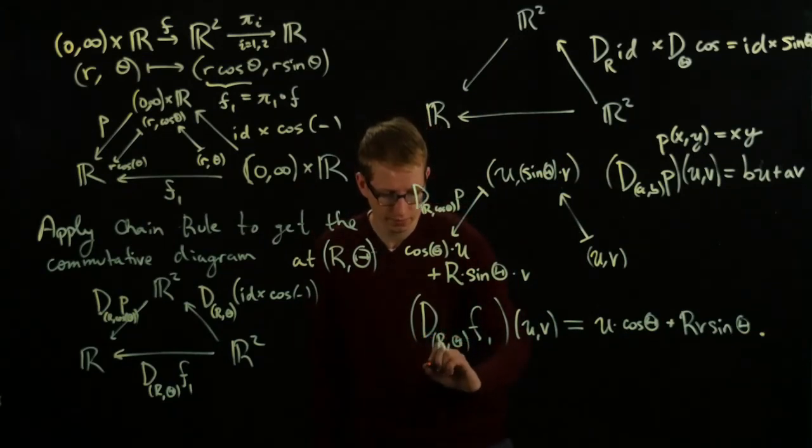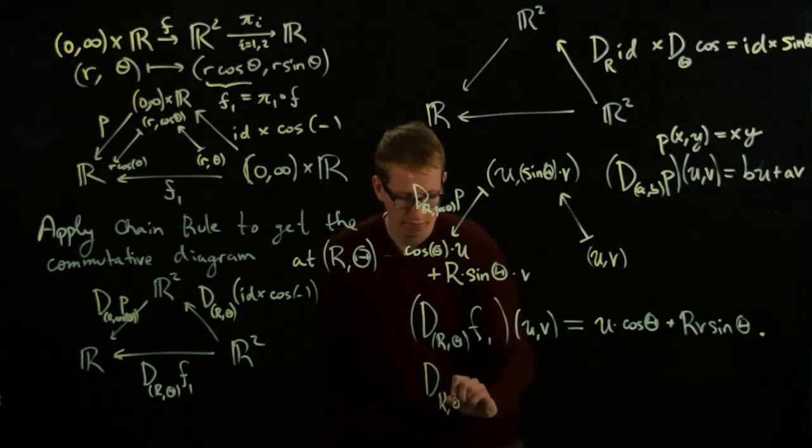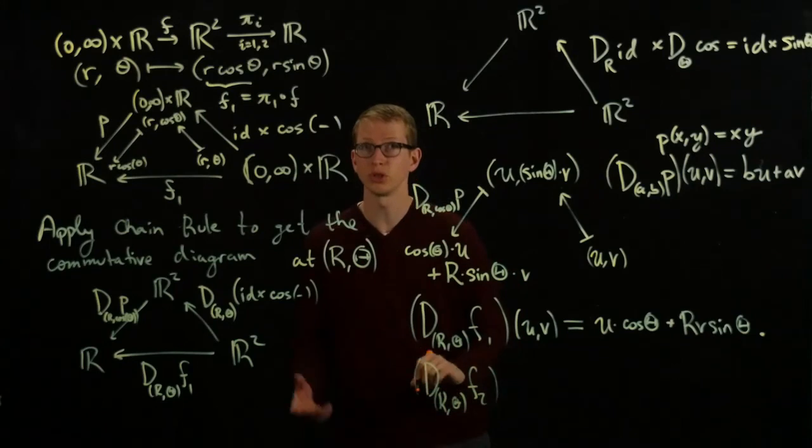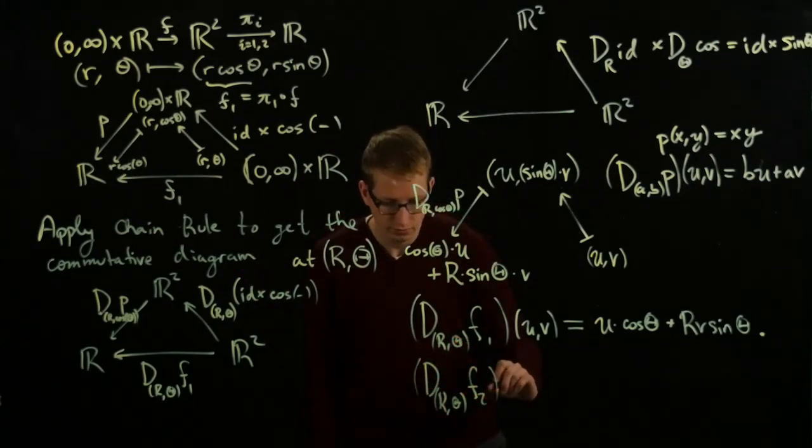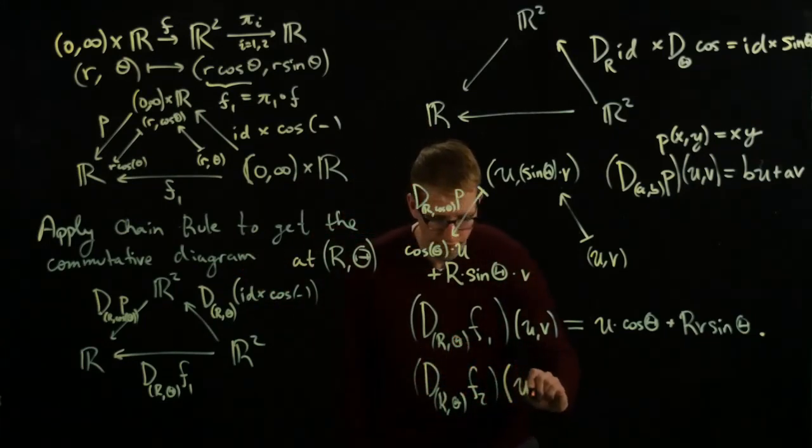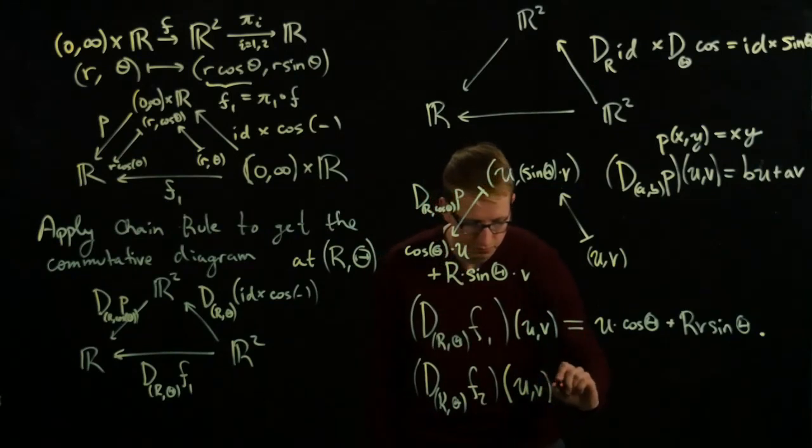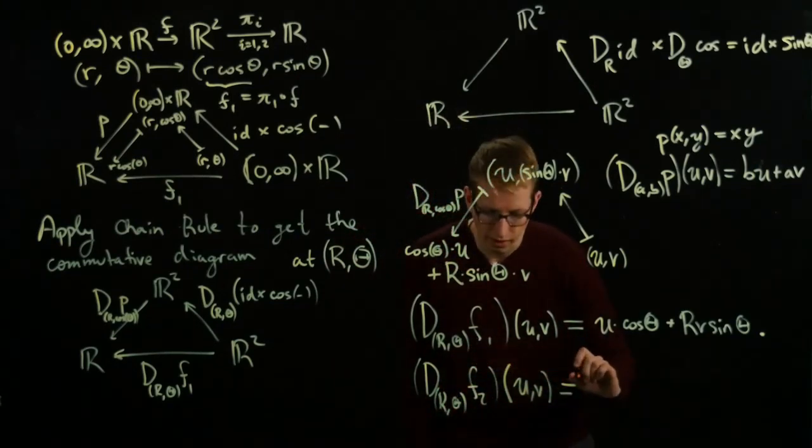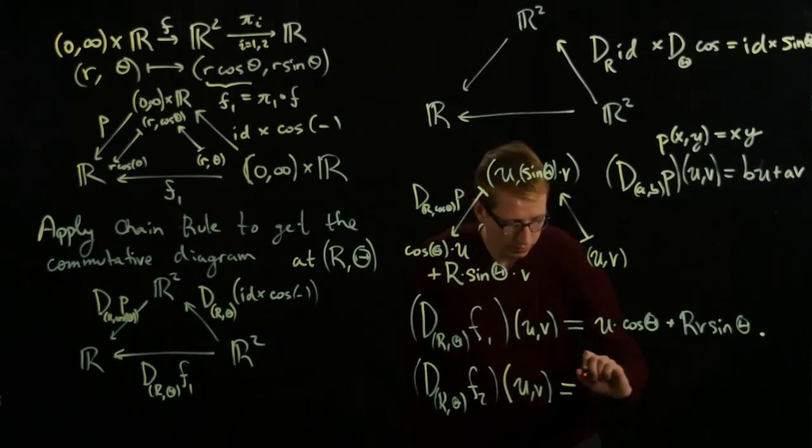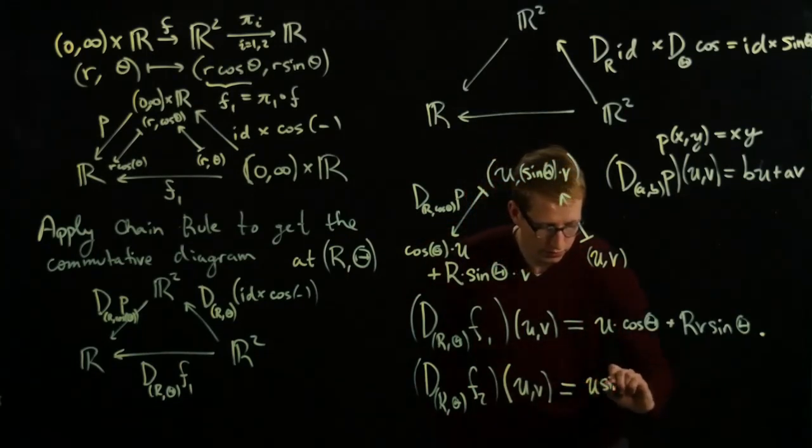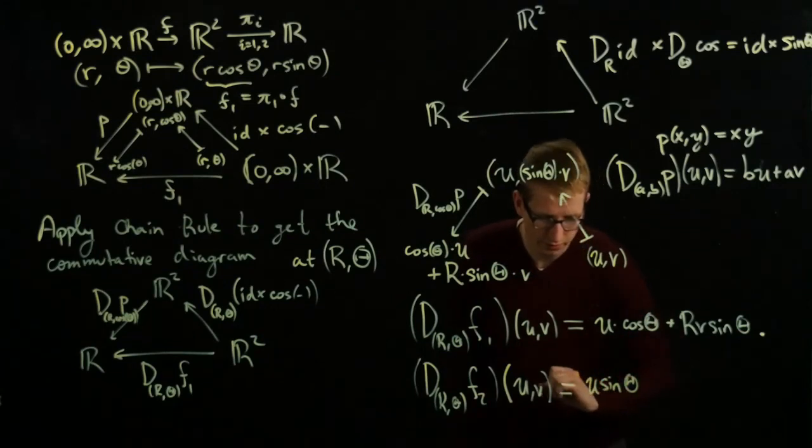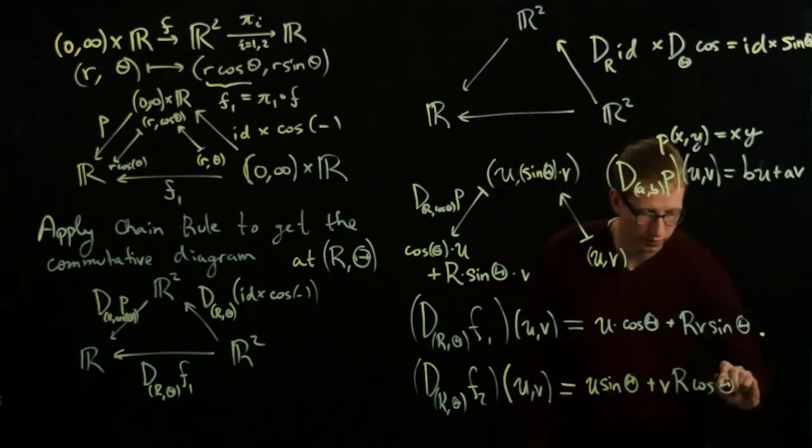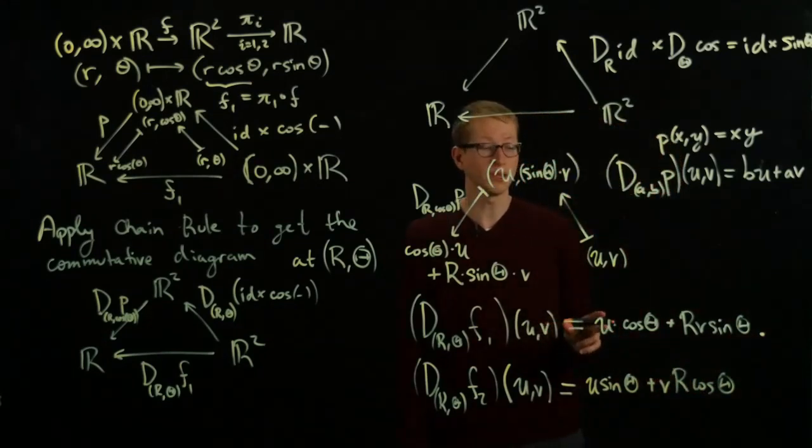Similarly, the second derivative, using very similar ideas as these, we get that the derivative of F₂ applied to (U, V) is U sin θ + VR cos θ. And I just realized that I made a mistake here.